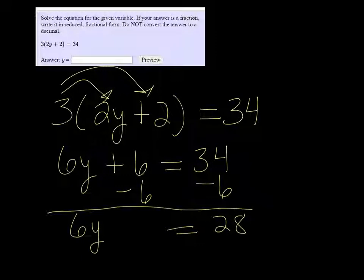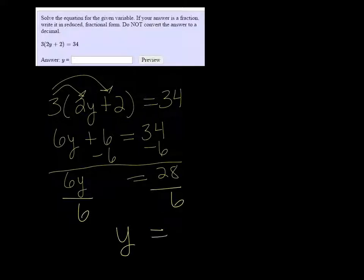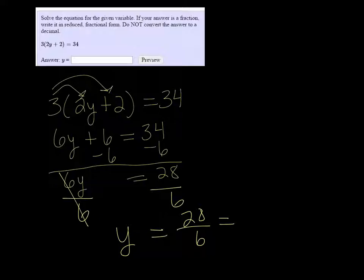And then finally we need to divide both sides by 6 to get y completely by itself. So we get 28 over 6, but that will reduce — we can divide them both by 2 and get 14 over 3.